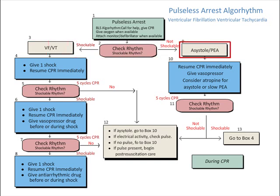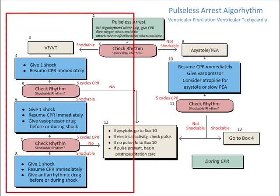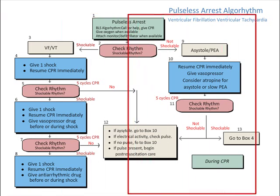There are two main parts to this algorithm. The ventricular tachycardia fibrillation side which can be fixed with defibrillation and the asystole, PEA side which requires therapy other than defibrillation.